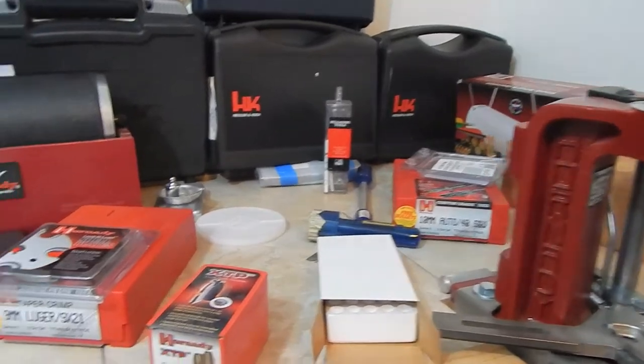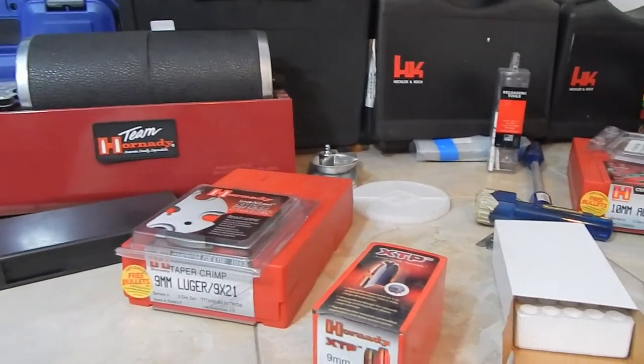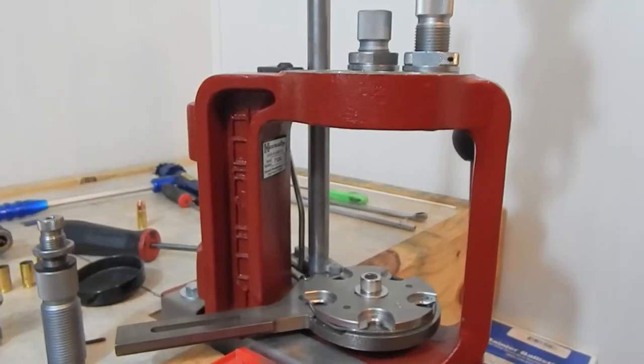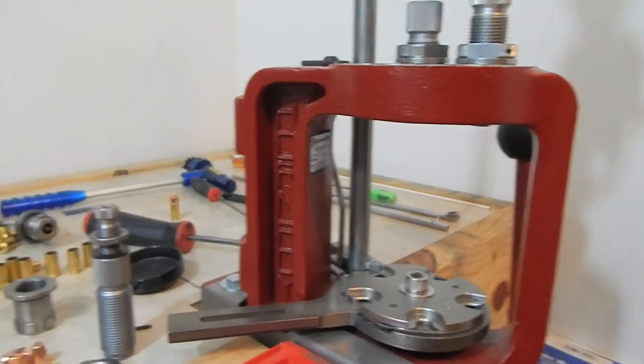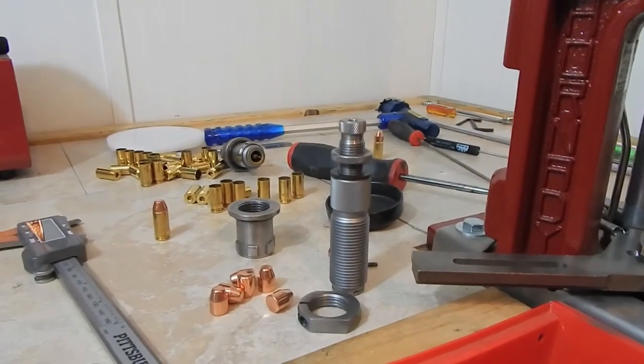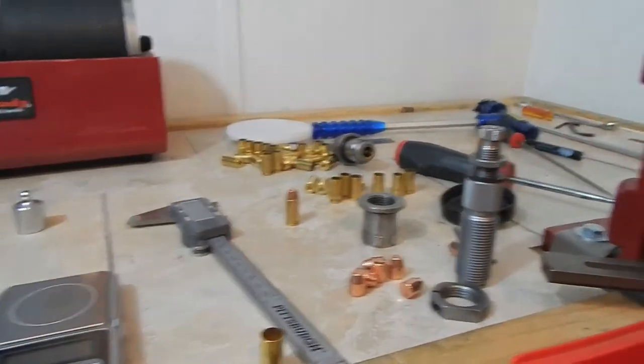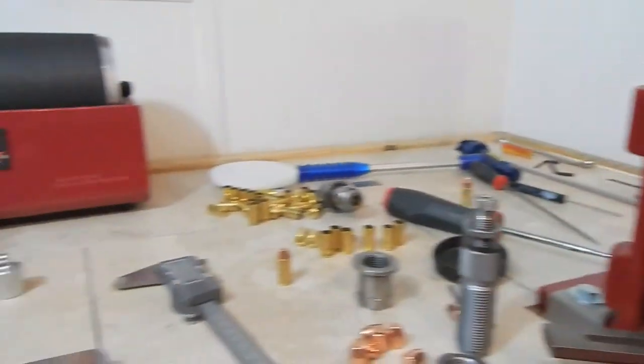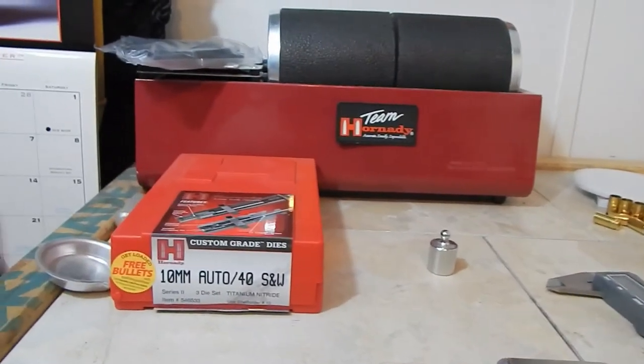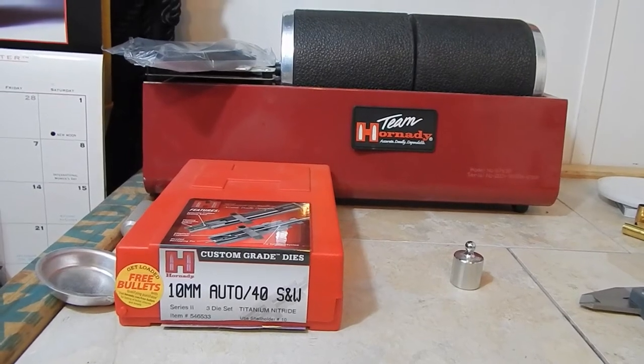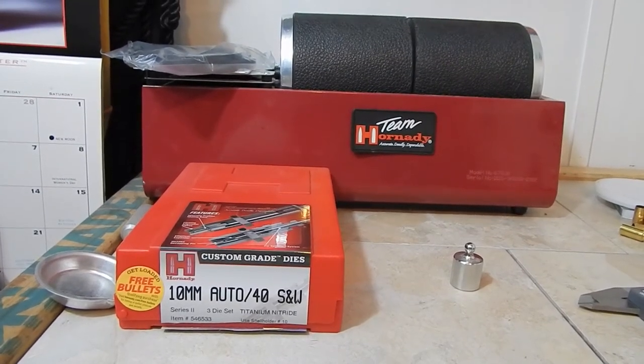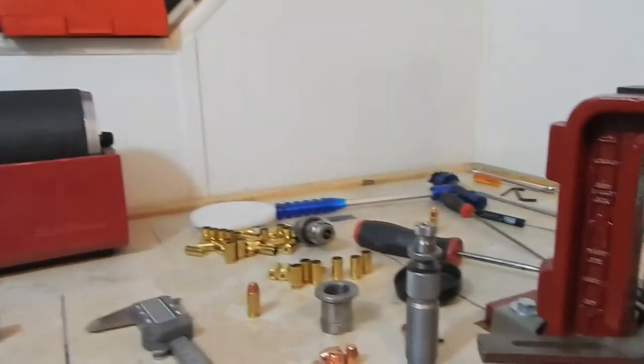Hi, welcome to Tactical OP and NEO's Handguns and Reloading. I'm OP, and there's NEO. In this video, we're going to be setting up the bullet seater die on the Hornady Lock and Load AP Press. I have the Hornady Custom Grade die set for 10mm or 40 Smith & Wesson and I am loading 40.